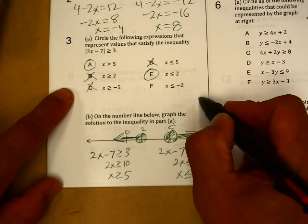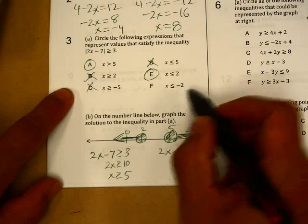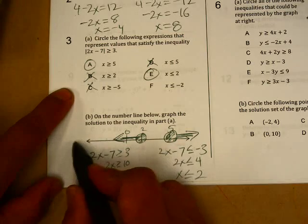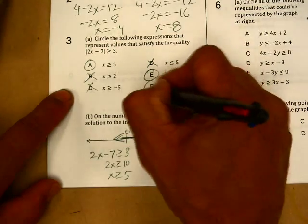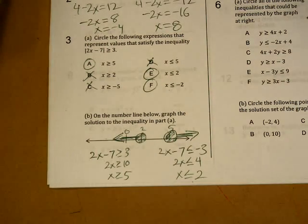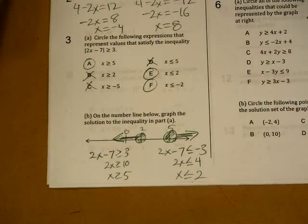And x is less than or equal to negative two. So that would start at negative two and go down. So that one does satisfy the inequality. However, it doesn't include all the values. None of them do.